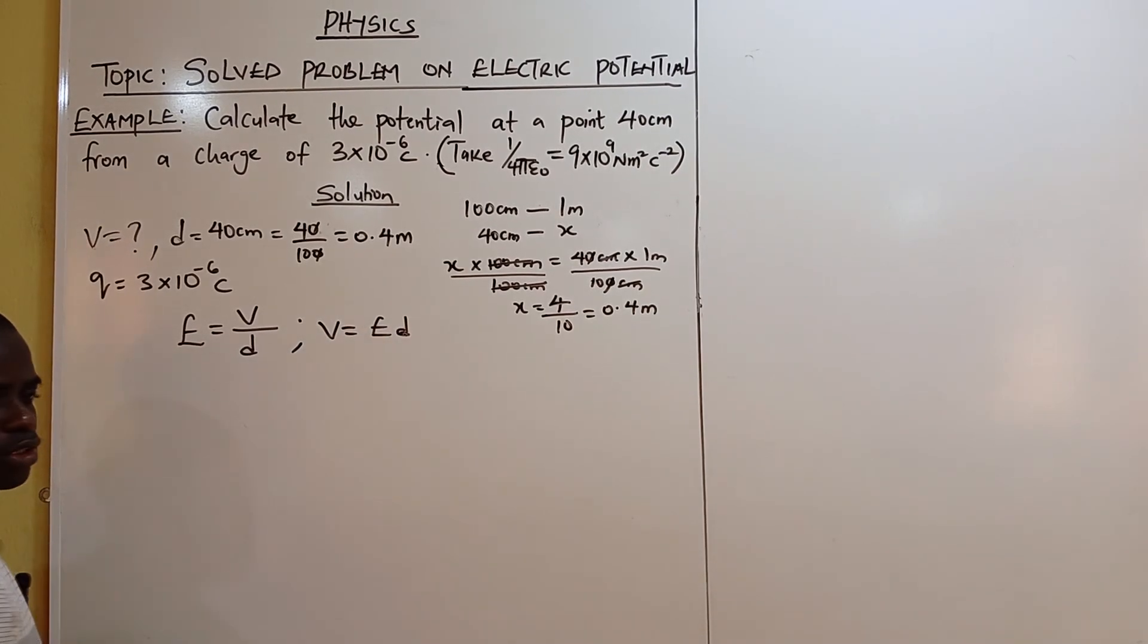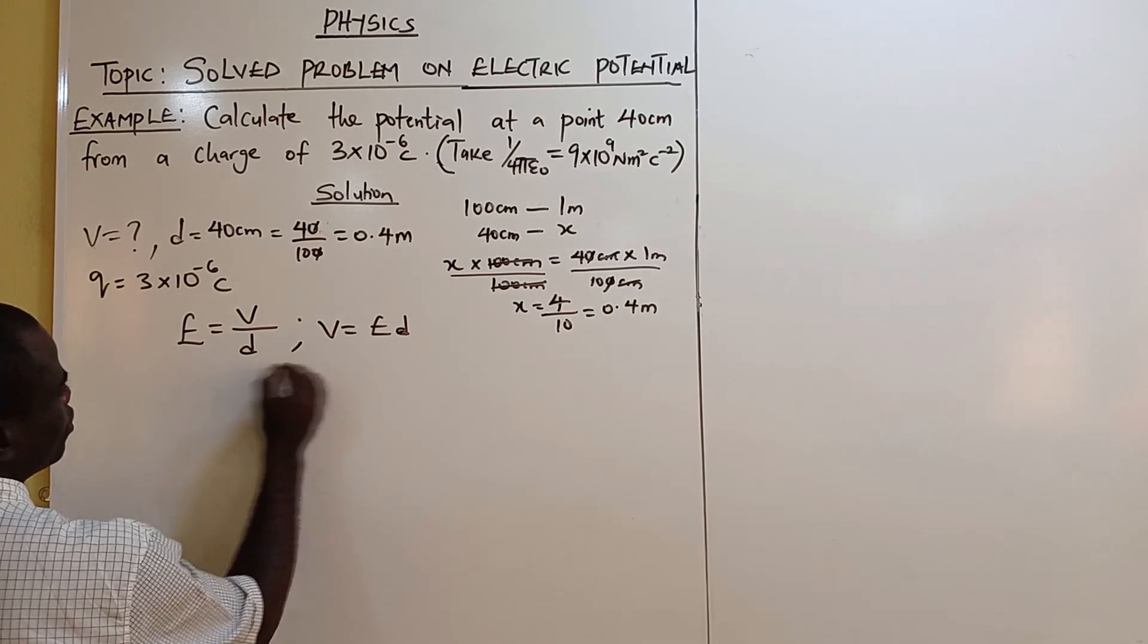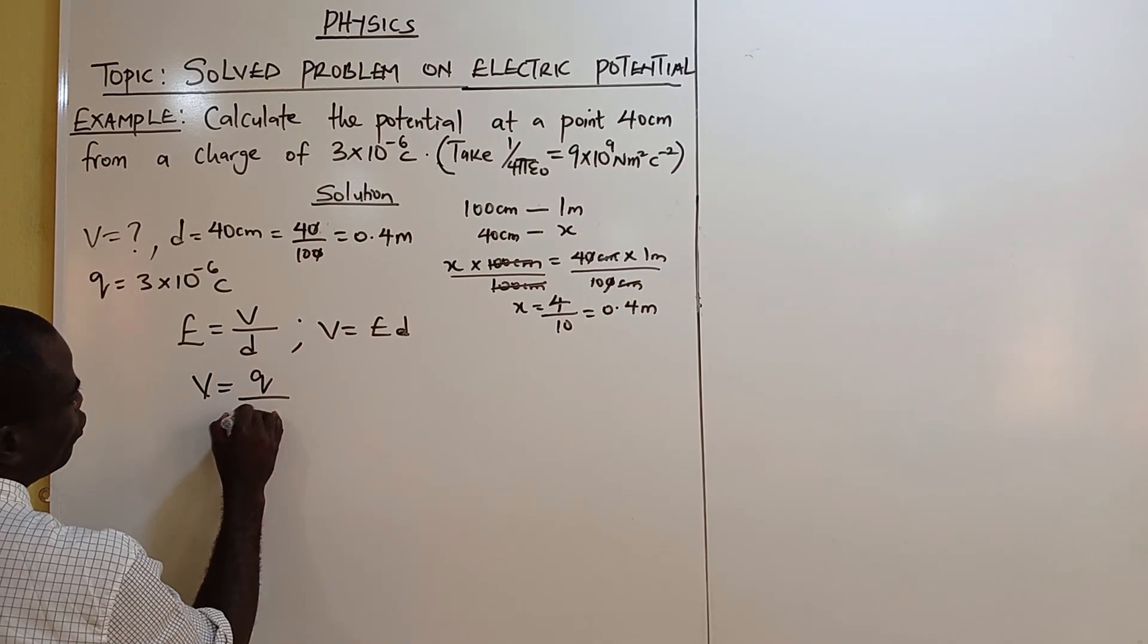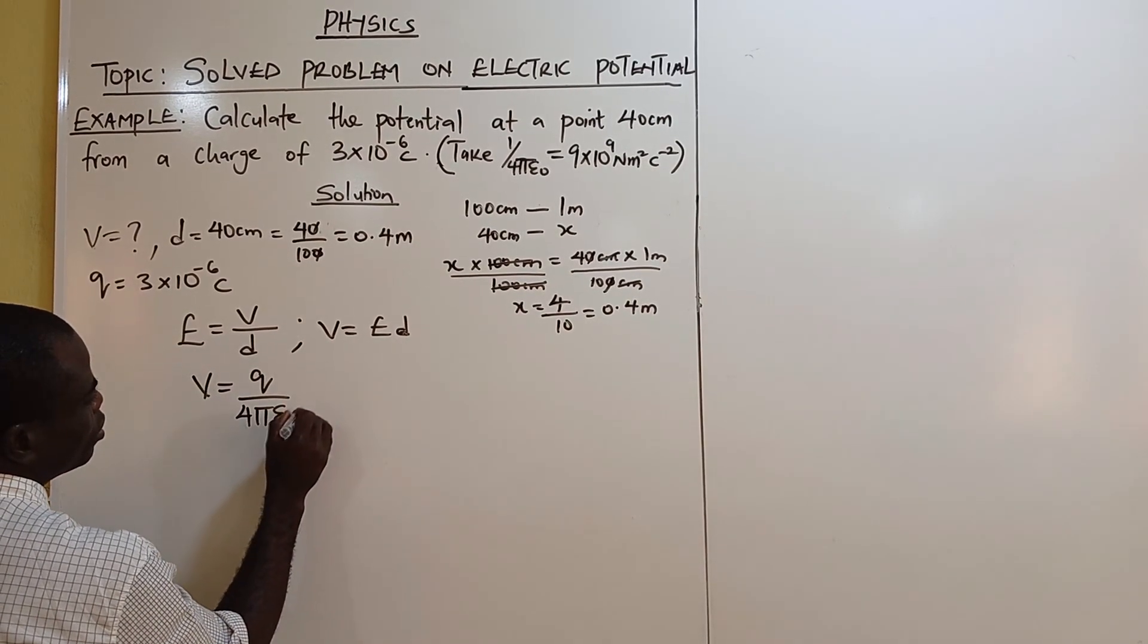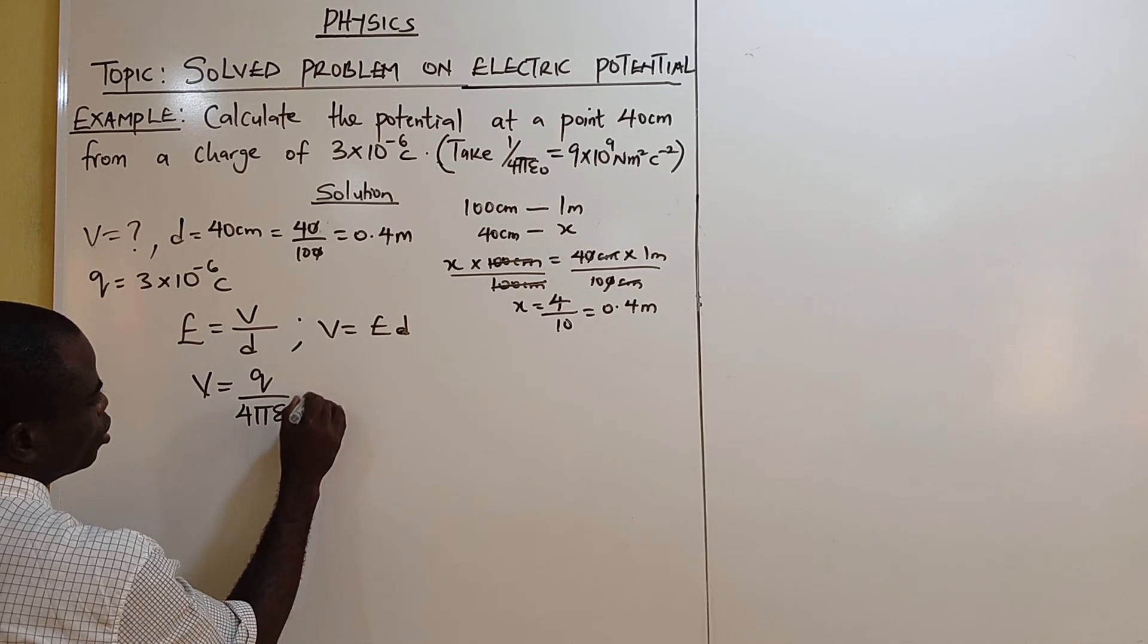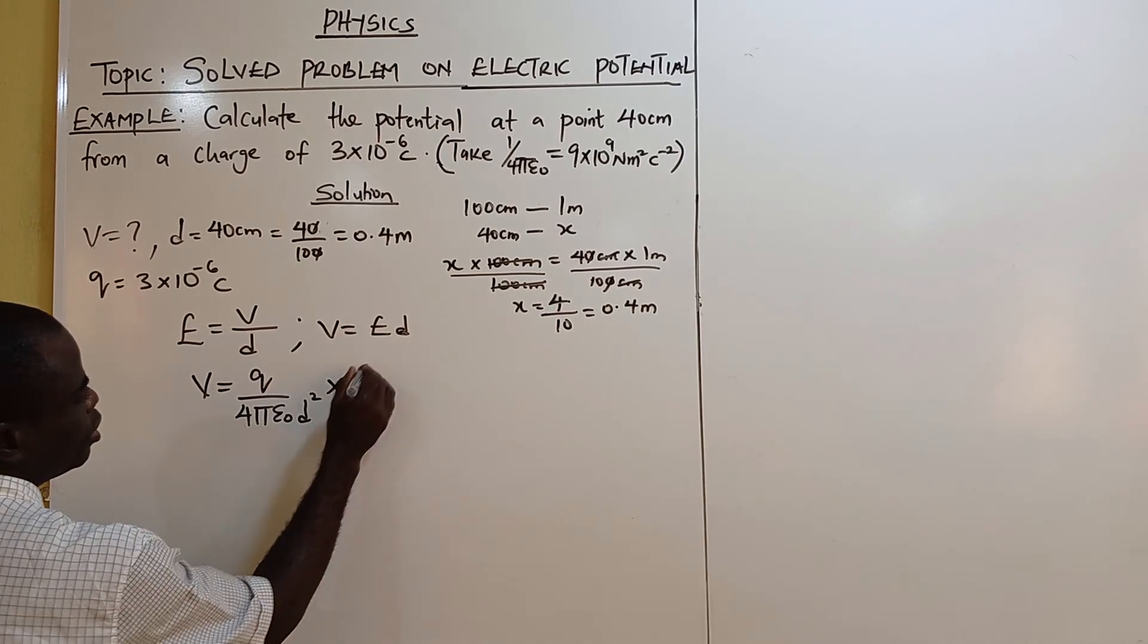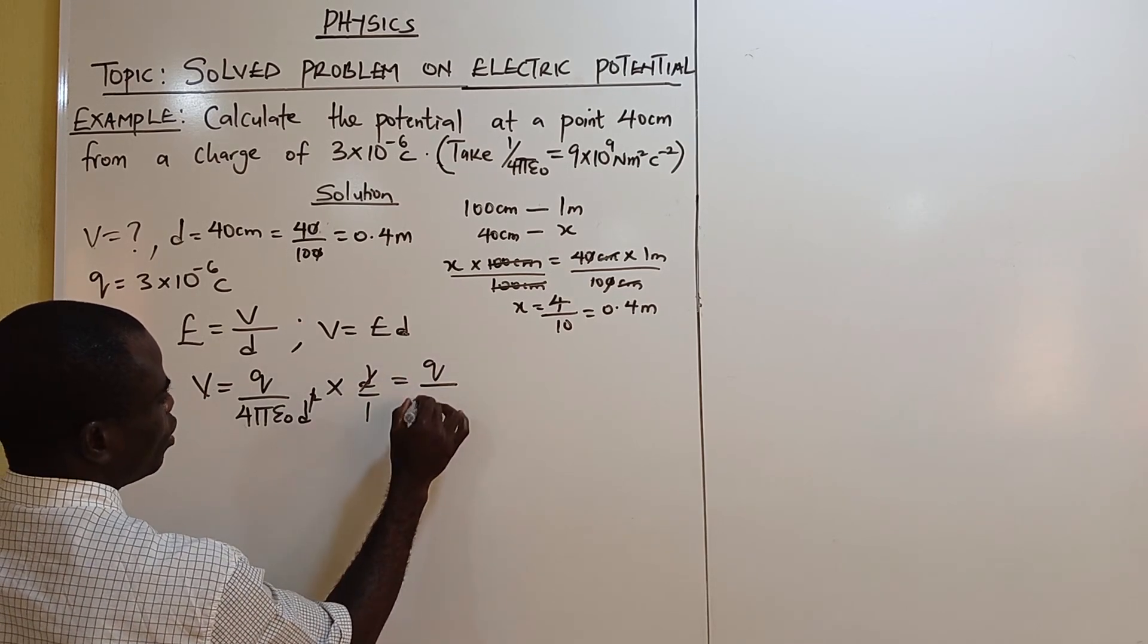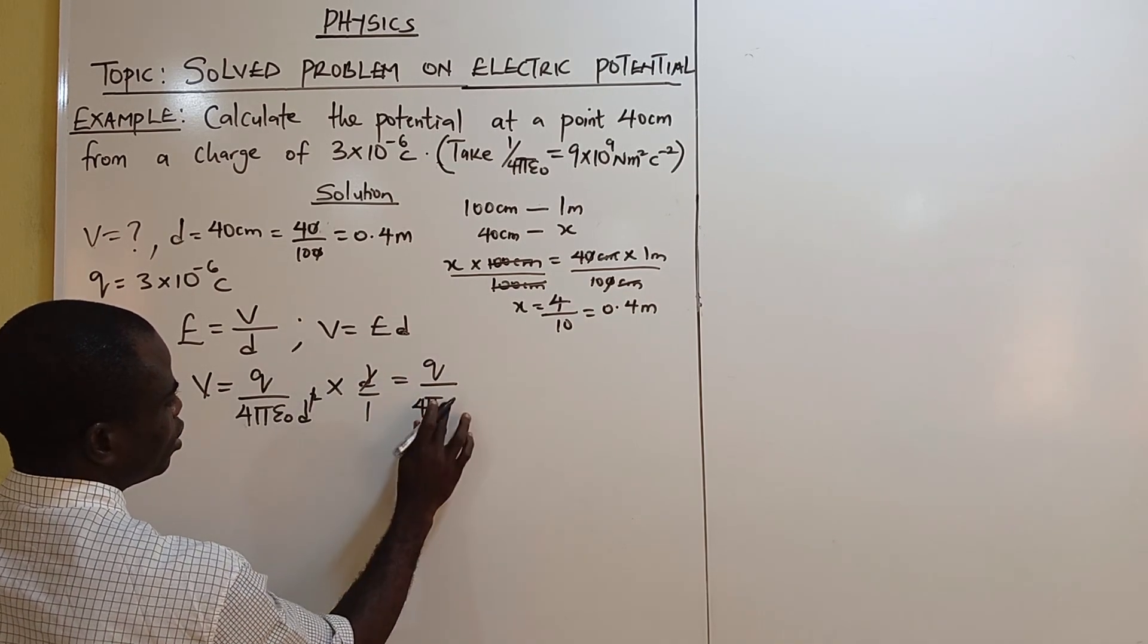An expression for electric field intensity is Q over 4 pi epsilon naught times Q over D.